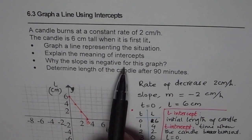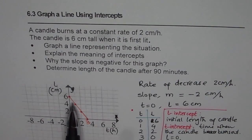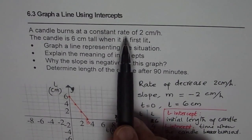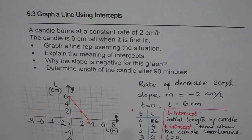Why the slope is negative for this graph? Slope is negative since the rate shows a decrease in the length. So whenever there is any decrease, you'll find the slope to be negative.